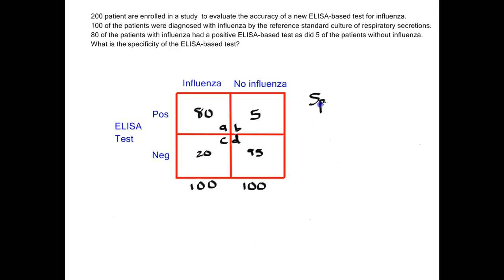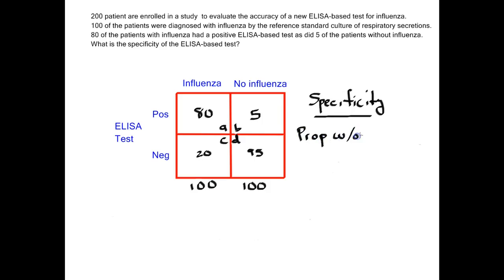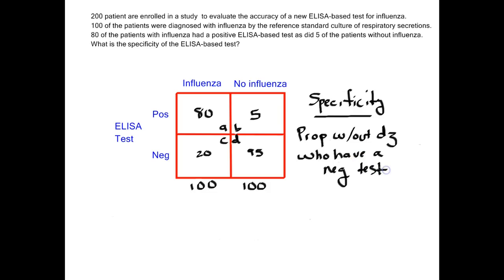Let's understand specificity in terms of words and not necessarily a formula first. Specificity is the proportion of people without disease who have a negative test. I think if you think about specificity in terms of its word definition and not so much worry about its formula, you'll be able to figure out how to make the calculation.